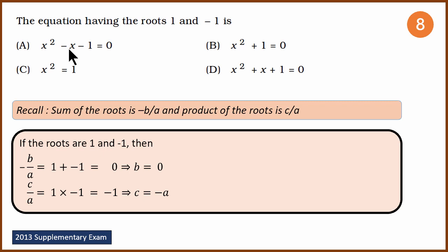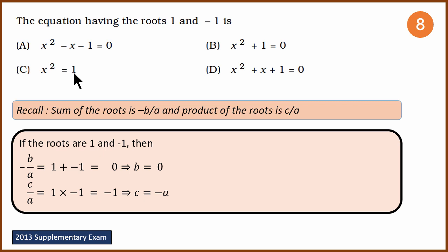Checking the options: the first option has b equals minus 1, not 0, so it's eliminated. The second option has b equals 0, but c and a have the same value (both plus 1), meaning c equals a, not minus a — so B is not the answer. The third option has no x coefficient so b equals 0, and if you bring the constant to the left-hand side, c equals minus 1 and a equals 1, so c equals minus a. That is correct. The answer is C.